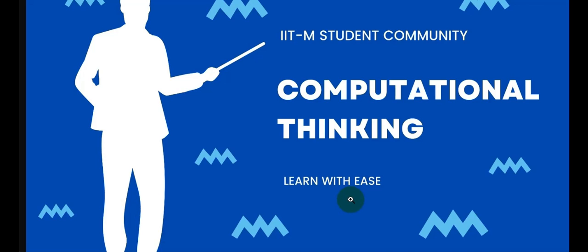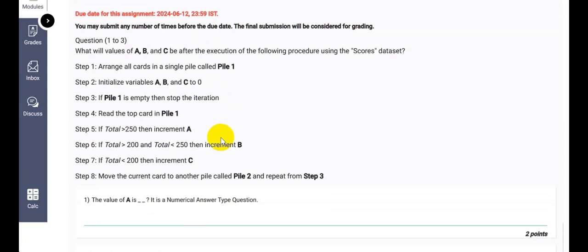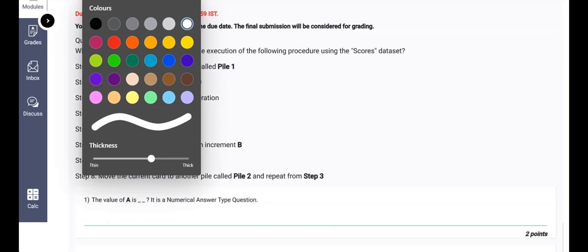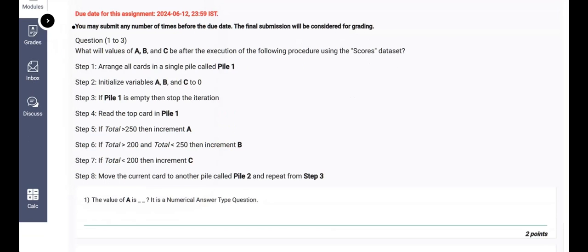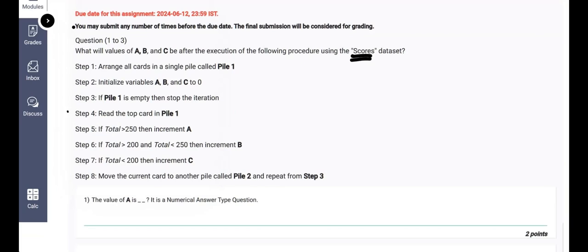Greetings everybody. Welcome to the computational thinking graded assignment week 1. Let us start the computational thinking graded assignment now. Here is the first question. We are asked to find out what will the values of A, B, and C be after the execution of the following code. Here we are given a scores dataset and we need to consider it.